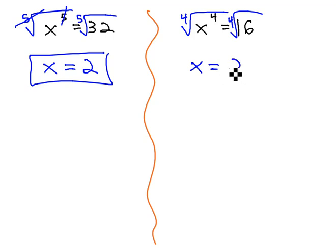X could equal positive 2, or x could equal negative 2. And the way we'll usually write this is we'll kind of shorthand it to plus or minus 2, meaning x is either positive 2 or negative 2.